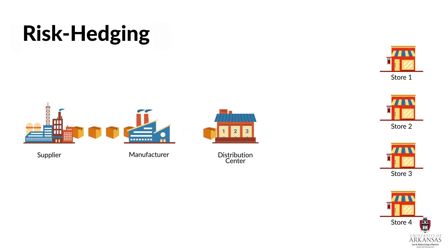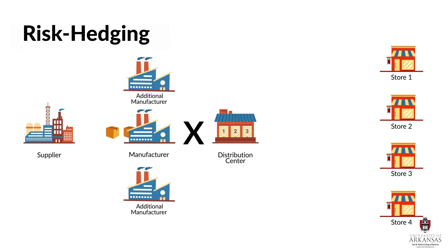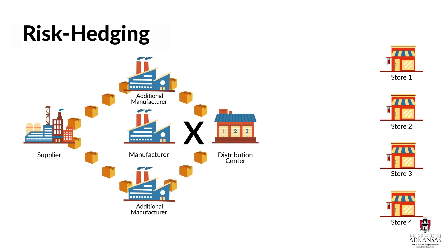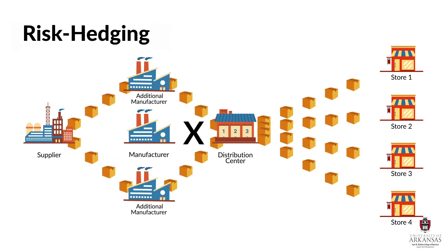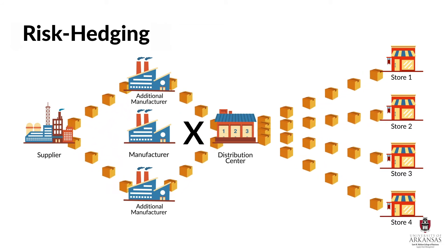What can a supply chain manager do? Much like with suppliers, if a manufacturer continues to cause supply disruptions, the manager should hedge their risk and obtain additional manufacturing sources to spread out the risk of delayed production. As these supplier and manufacturer examples demonstrate, a risk hedging strategy would discourage single sources of supply, especially from unreliable providers of goods or services.